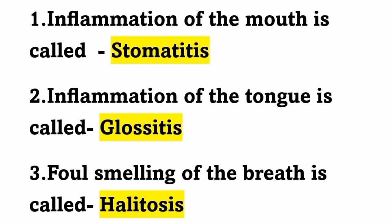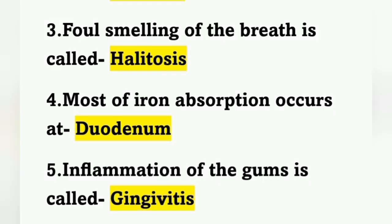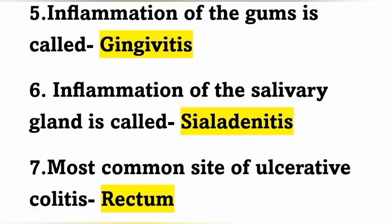The next question: most of the iron absorption occurs at which part of the stomach? It is the duodenum. Next: inflammation of the gums is called gingivitis.